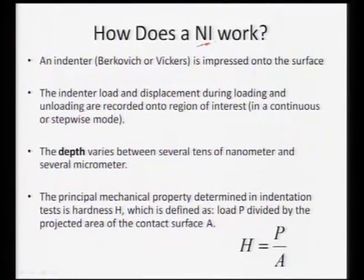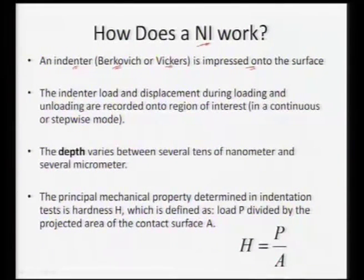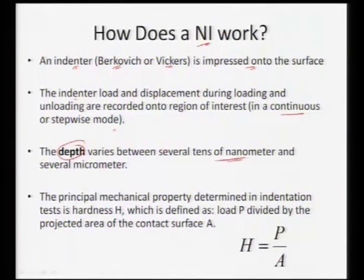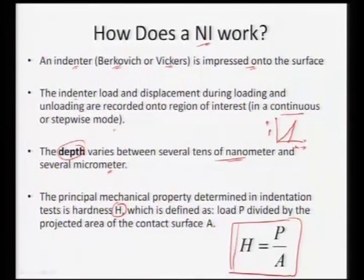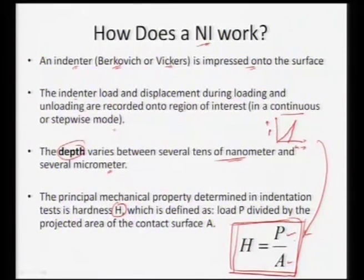How does nano indentation work? We have an indenter — it can have a Berkovich tip, which is a pyramidal tip, a Vickers tip, or a conospherical tip — which is impressed onto the sample surface. The indentation load and displacement are recorded continuously in this instrumented indentation. The depth varies from several nanometers up to micrometers. From the loading and unloading cycle recorded continuously by the instrument, we can measure the hardness, which is given by the load divided by the projected area.